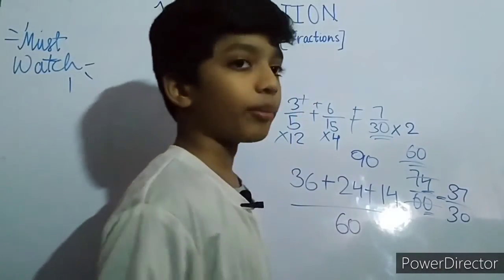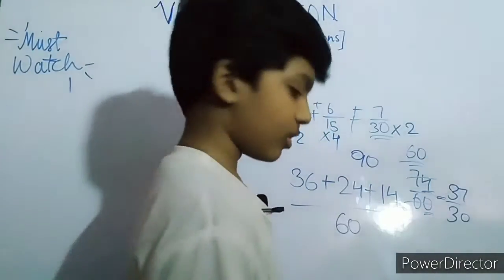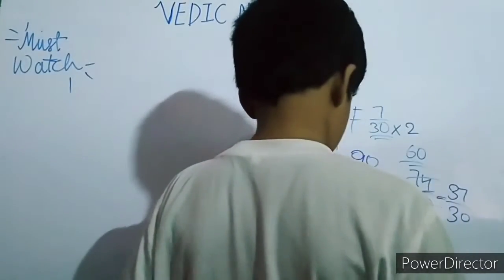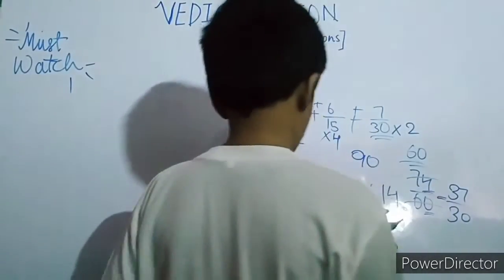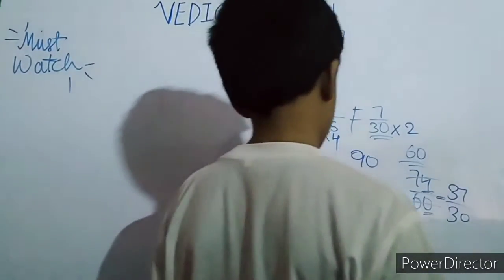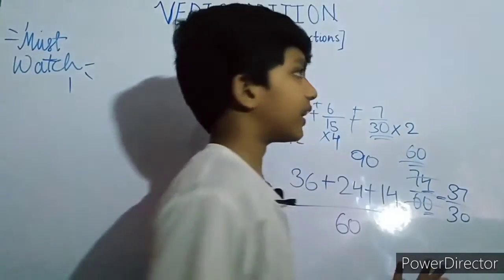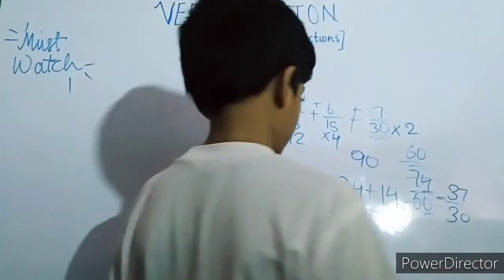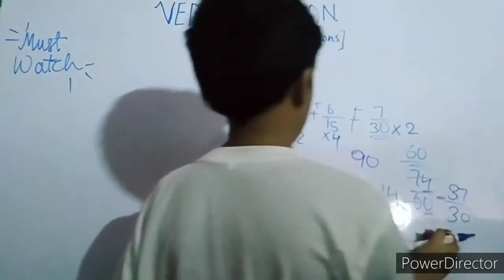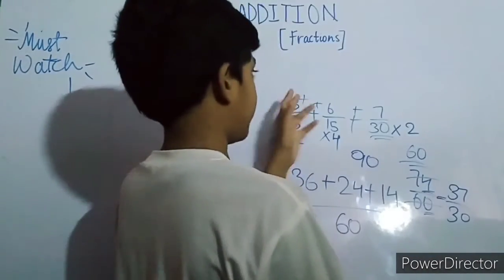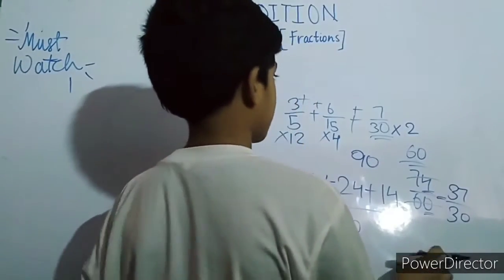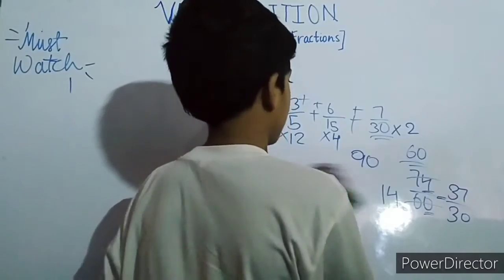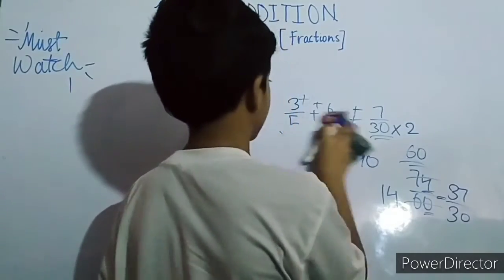Note this down — it is very important. Not only for this example of three by five plus six by fifteen plus seven by thirty, but for any example. You can take any other common multiple and you will get the same simplified answer.